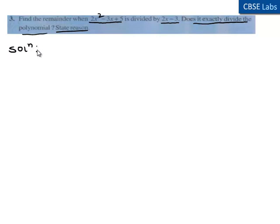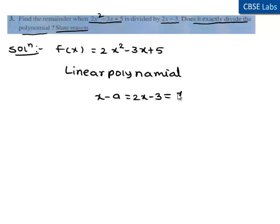Coming to the solution, the given polynomial f(x) is 2x² - 3x + 5, and the linear polynomial is 2x - 3, which is equal to x - 3/2.